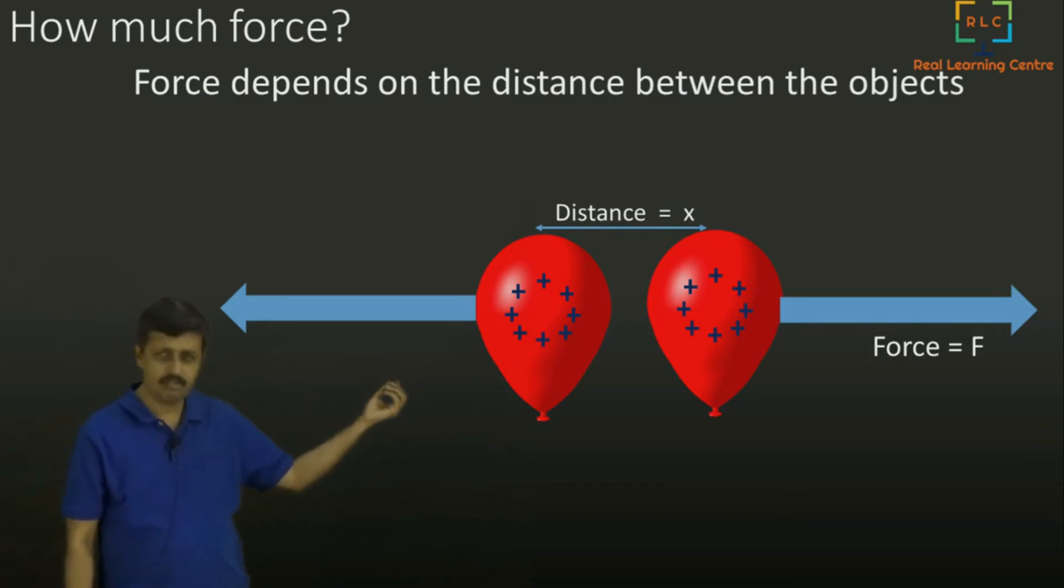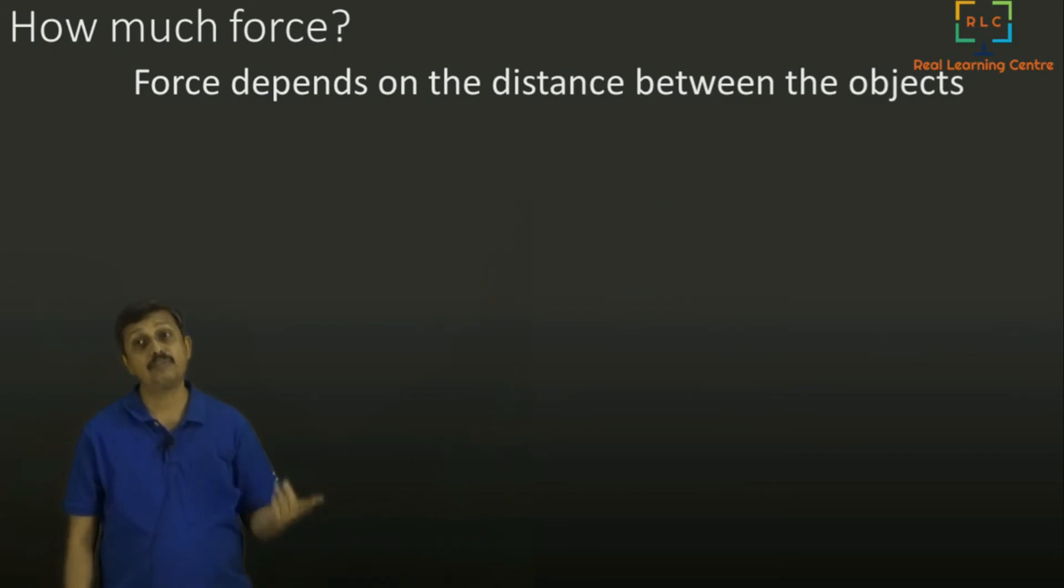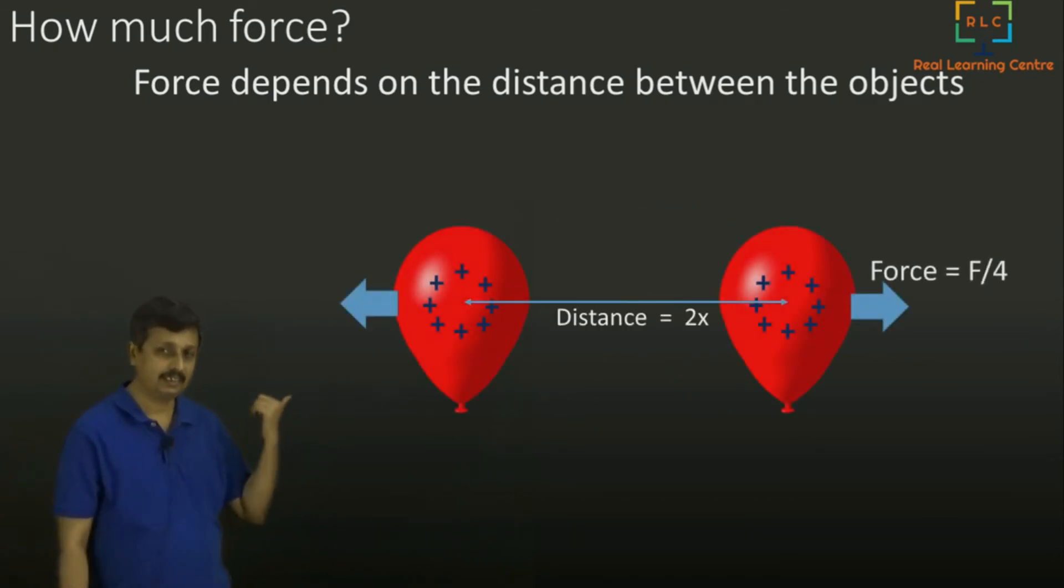So if I keep distance as some x, 2 meters, 2 centimeters, whatever, call it x. And let's say force is f. This is the force with which they repel. Very nearby, so very large force. Suppose if I make the distance between them double, in the sense that I will make it as 2x. Double the distance. Then what happened to the force? The force became f by 4. It became one fourth.